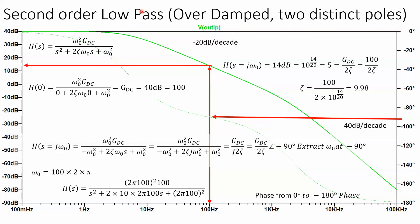For a second-order low-pass filter we have three conditions: over-damped, critically damped, and under-damped. It might be tempting for the over-damped case — where you can see two distinct bends in the magnitude — to try to extract the poles right there, but it's really a lot better to use the generic second-order equation and find omega-naught from the phase. The DC gain is 40 dB, which is 100.